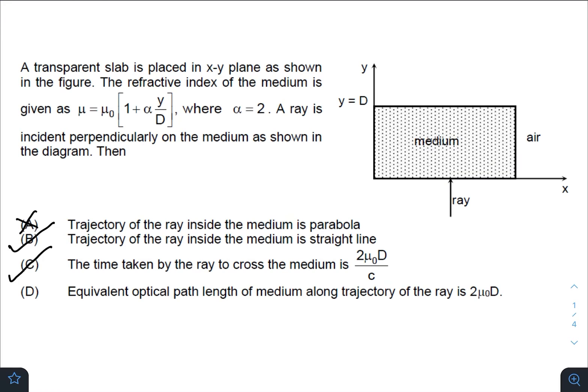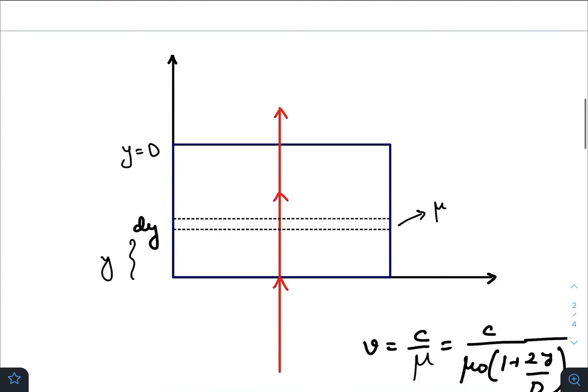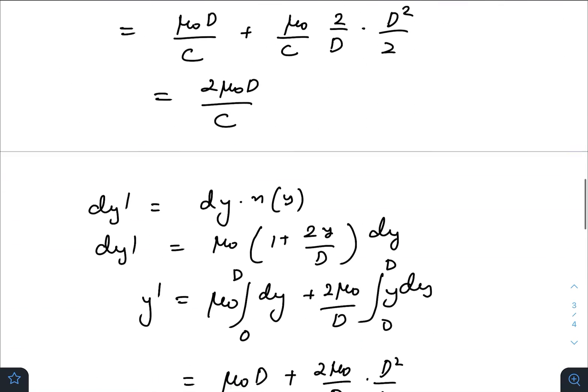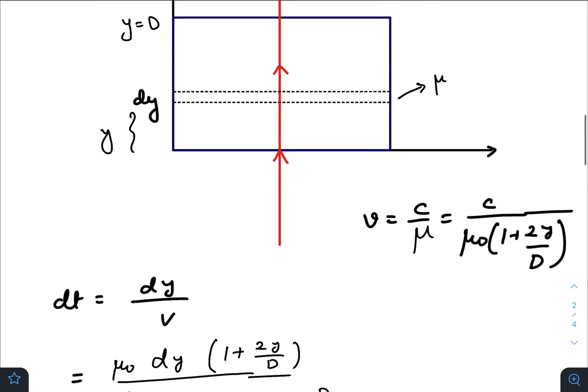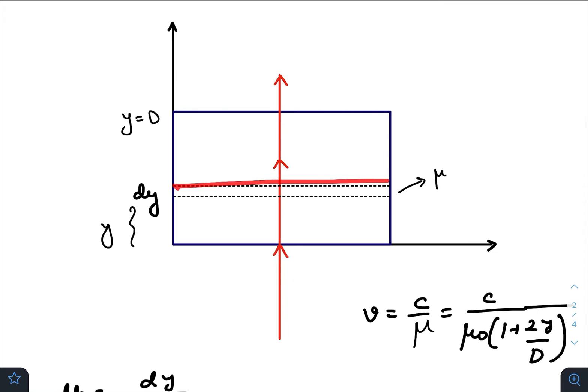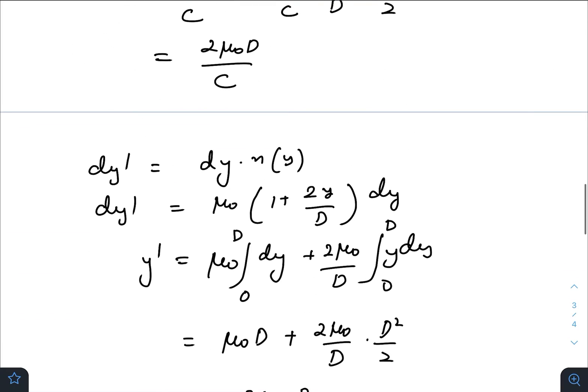For the fourth option: equivalent optical path length of medium along the trajectory of the ray is 2μ₀D. Optical path means refractive index times the geometrical path. Again, I have taken this slab of thickness dy. The optical path, which I consider as dy', equals refractive index times the geometrical path.